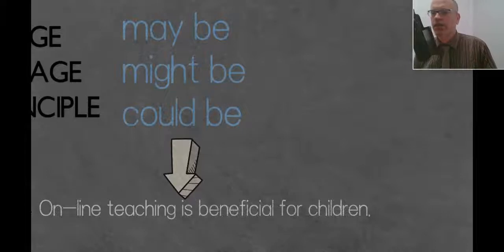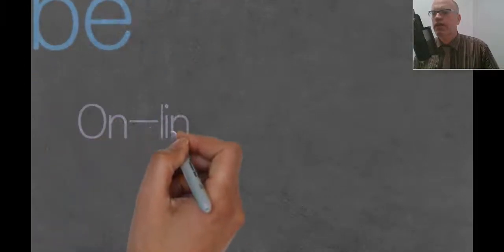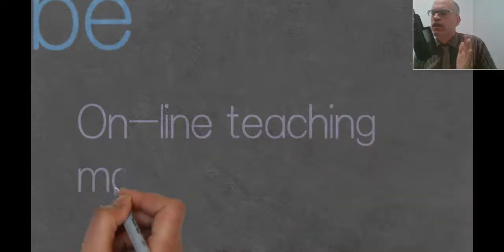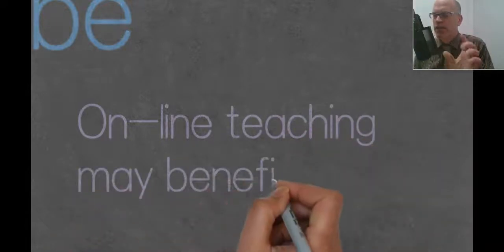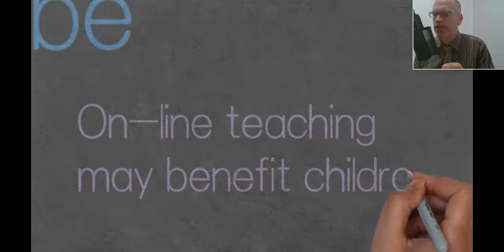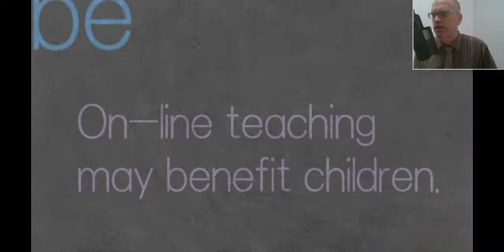Now another main structure that we use a lot in writing is a simpler structure. So let's have a look at that drawing up now. Online teaching may benefit children. So again we are using these words but now because the main word is a verb, it's benefit. We don't need to be. So we are now in effect making it kind of simpler really.